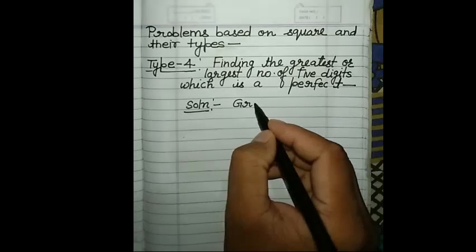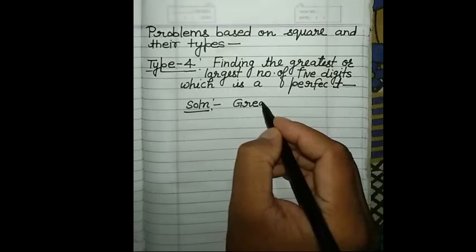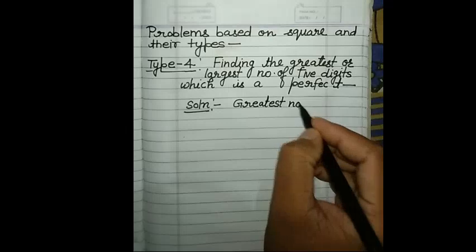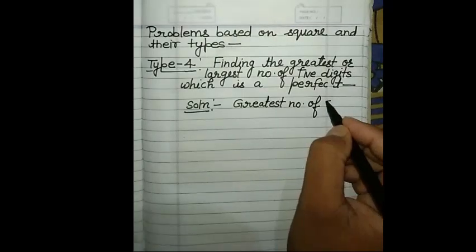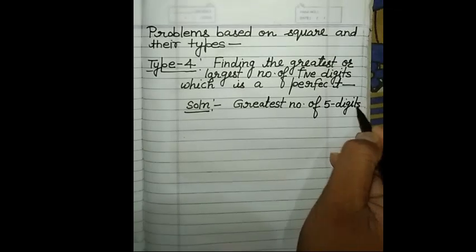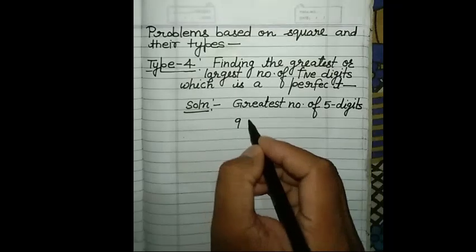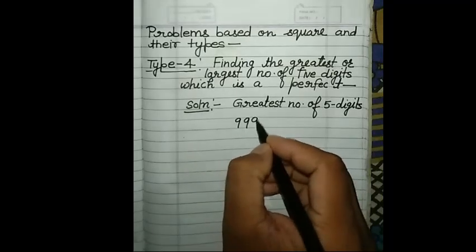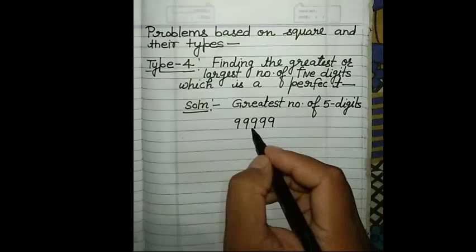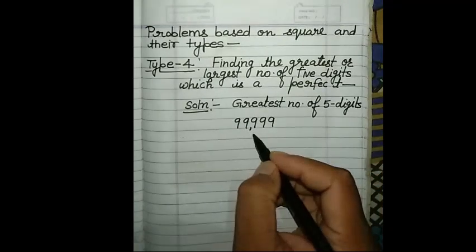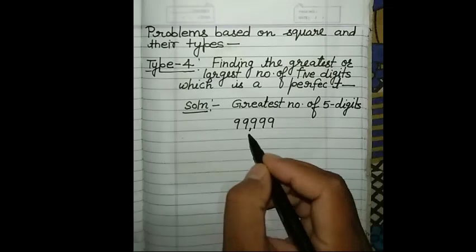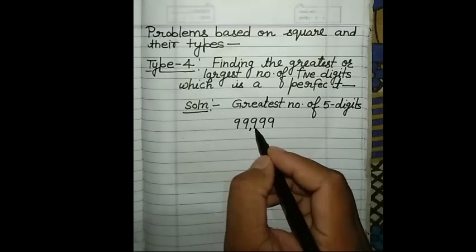It is very simple. When the largest number of digits or the greatest number is asked, we write 9 for the number of digits — since it is 5 digits, we write 9 five times. We put a comma according to the Indian system, so after 3 digits we count on the left side. So the greatest 5-digit number is 99,999.